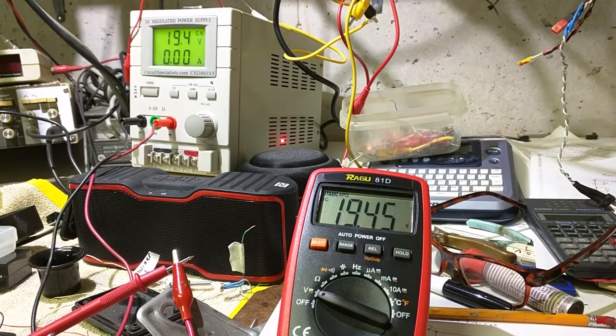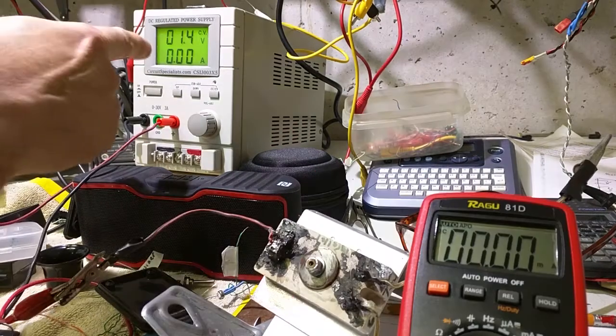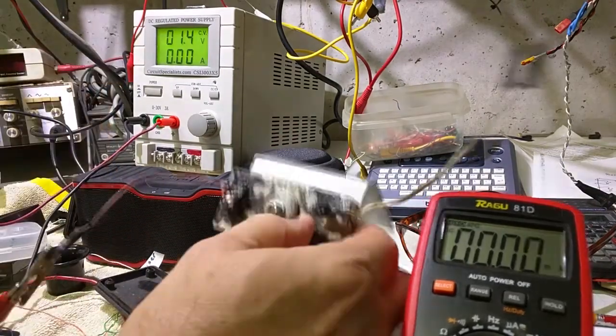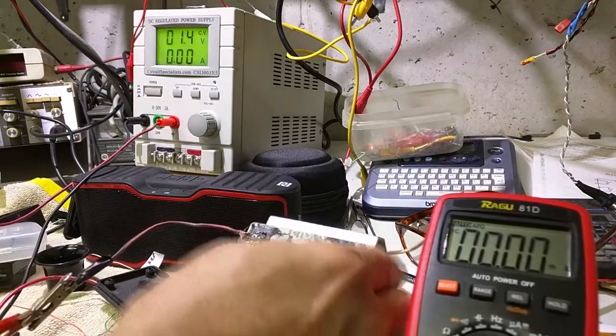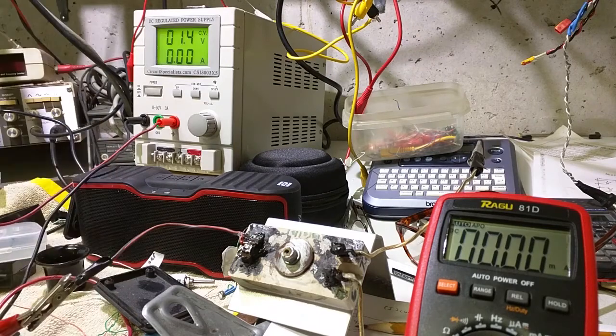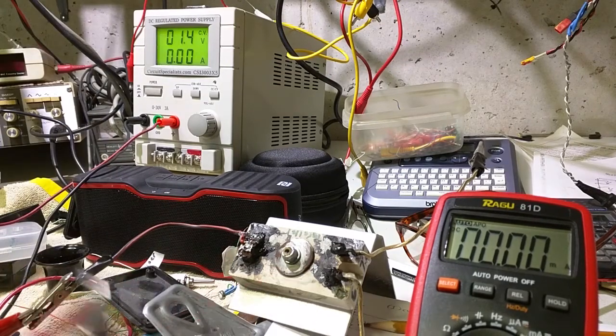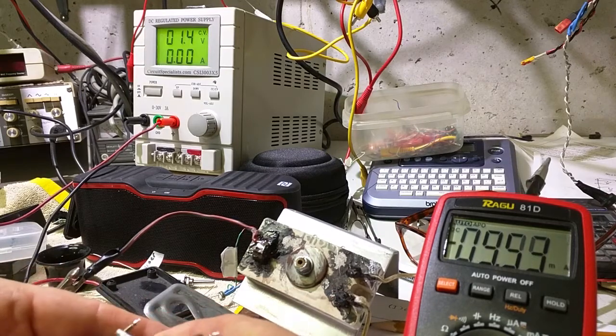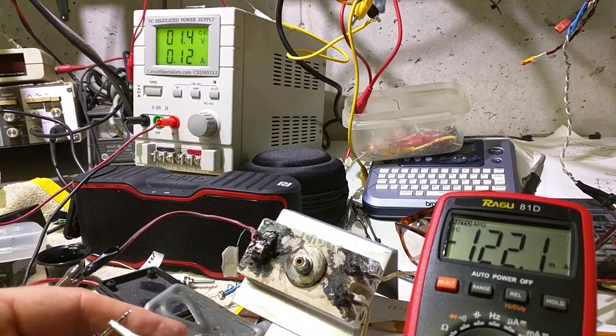Now let's see if we can measure some DC current. So I have the power supply set to 1.4 volts and I have a 5 ohm power resistor here and I have the 1.4 volts going through the resistor and I have the meter in series. And let's see what we get, I'm on milliamps.